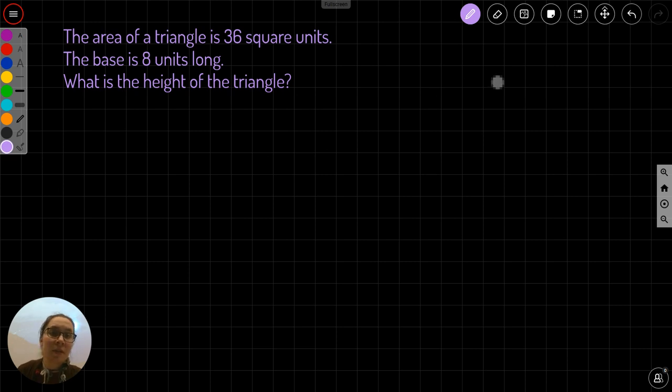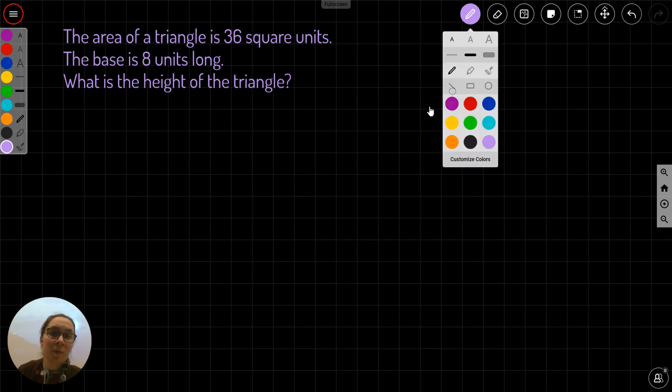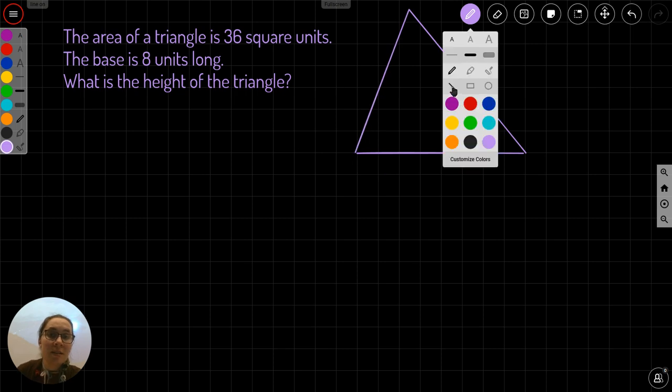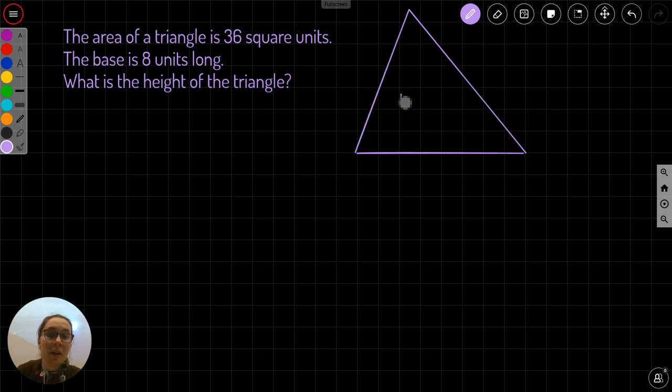So I could draw a picture of this. Say I had a triangle that had a base of 8 units, 4, 5, 6, 7, 8. And it had a height of some unknown number. I don't actually know. And I'm saying that the area equals 36 units squared. And the base is 8.